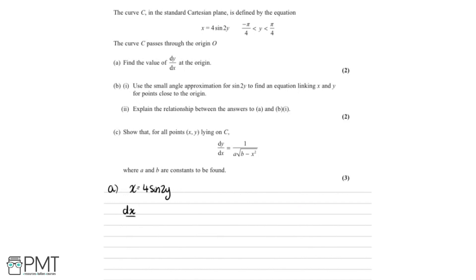Differentiating with respect to y, we get dx by dy equals 4 multiplied by — if we differentiate sine 2y, we'll get 2 cos 2y — so this equals 8 cos 2y. However, we need dy by dx, but we've got dx by dy, so we're going to take the reciprocal of both sides.